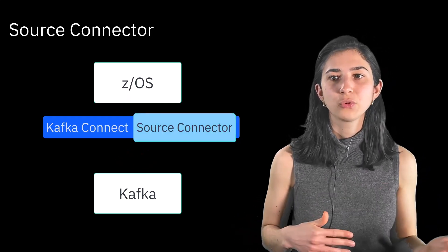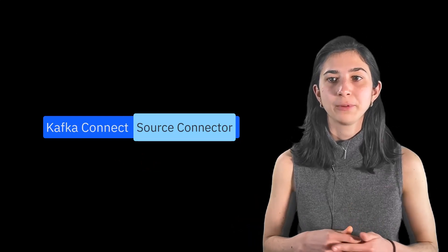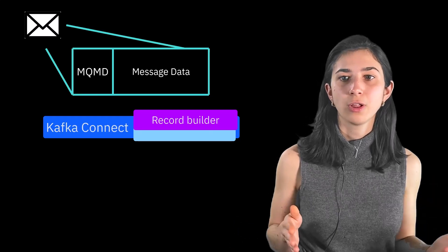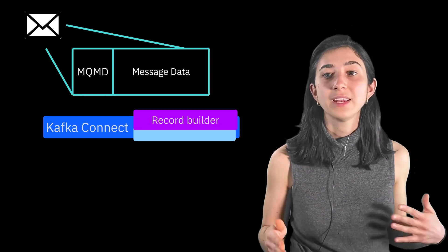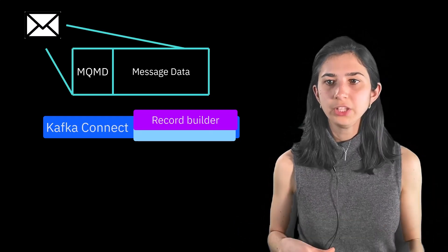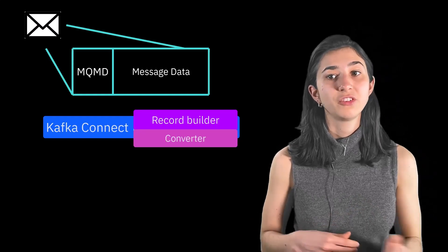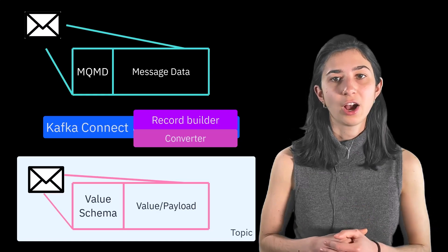When the MQ source connector reads a message from MQ, it chooses a schema to represent the message format and creates an internal object called a record containing the message value. Each record is then processed using a converter which creates the message that's then published on a Kafka topic.